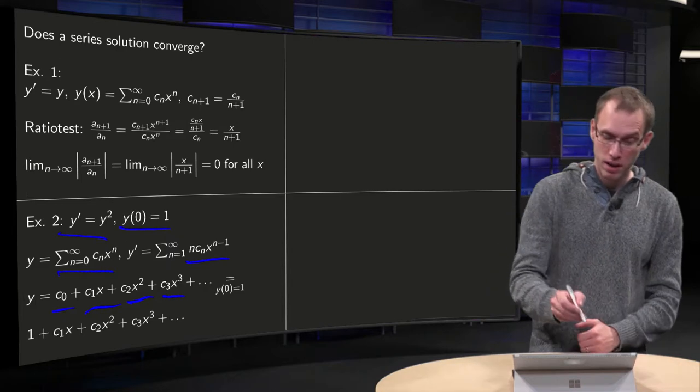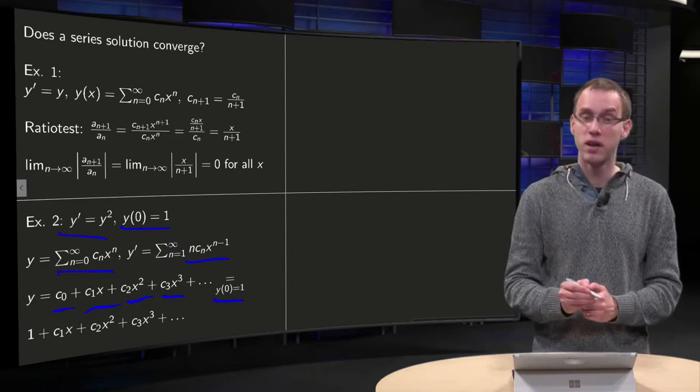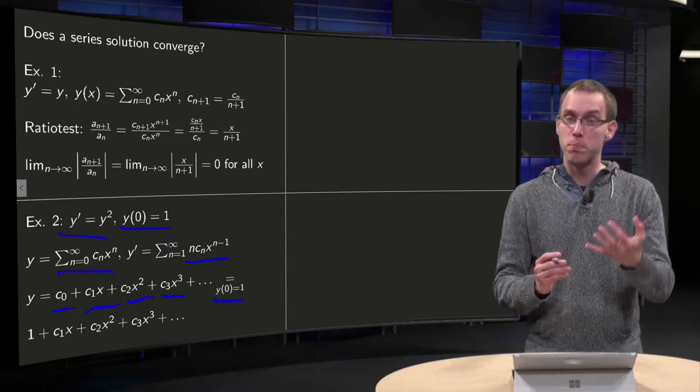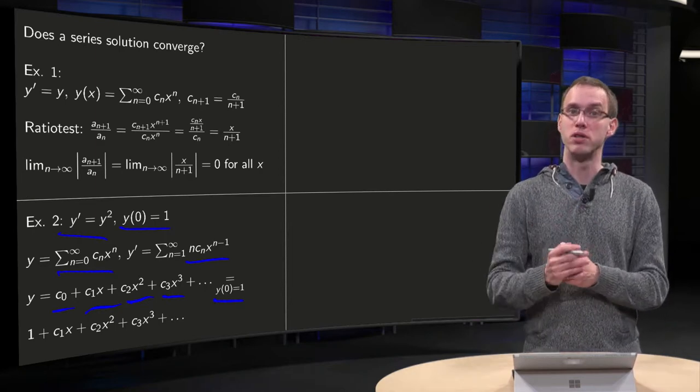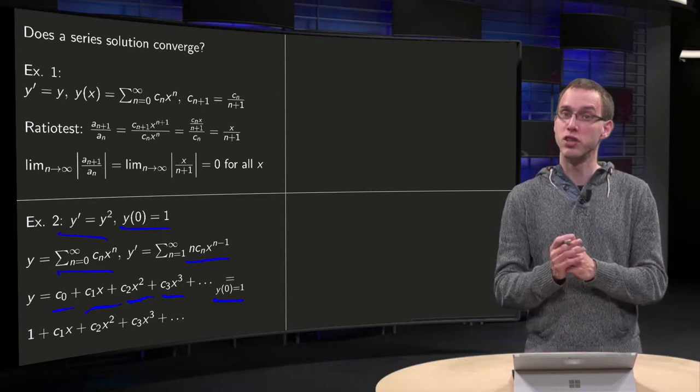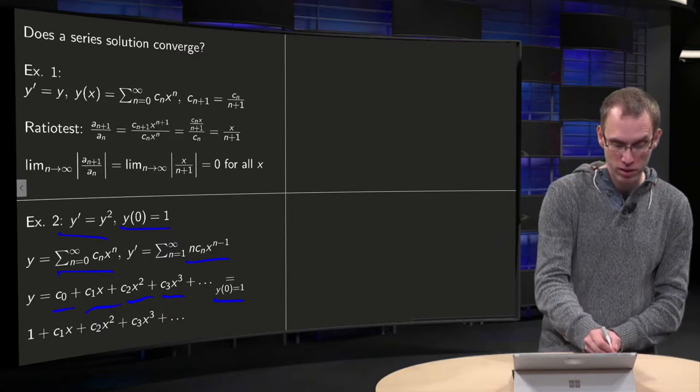And then we plug in the initial condition, y zero equals 1, and that means that if we plug in x equals 0, all the higher order terms disappear, and I am only left with c0, which equals 1, so we get 1 over here.